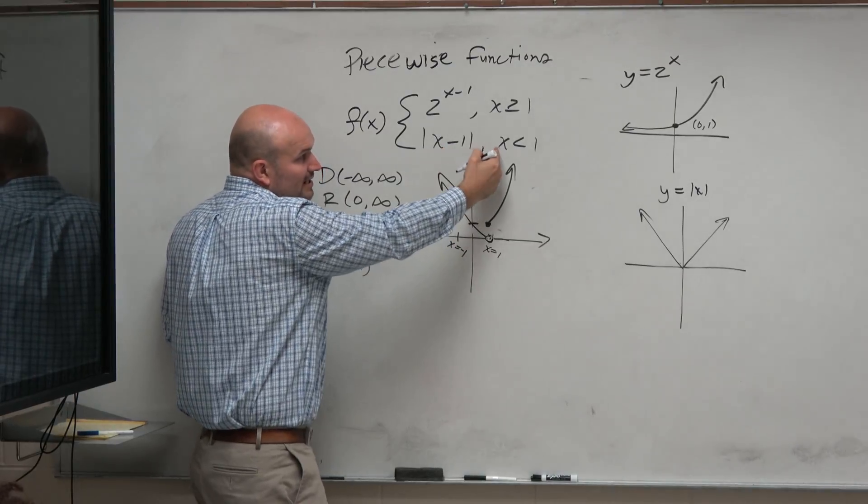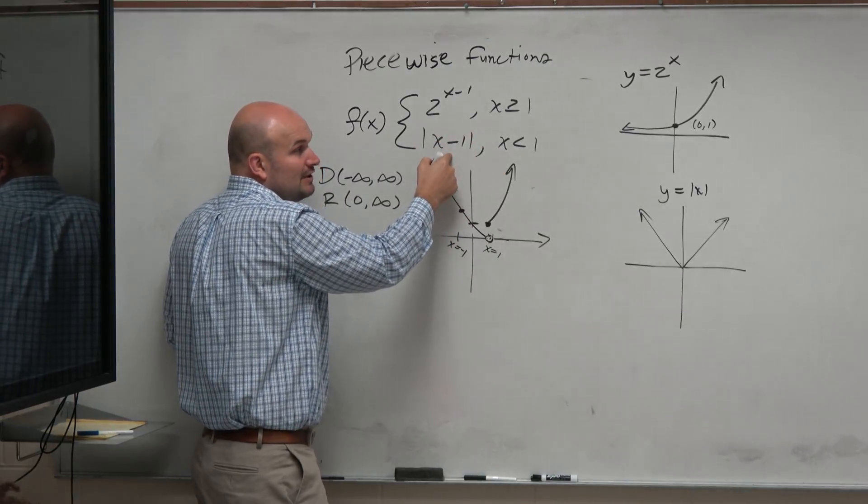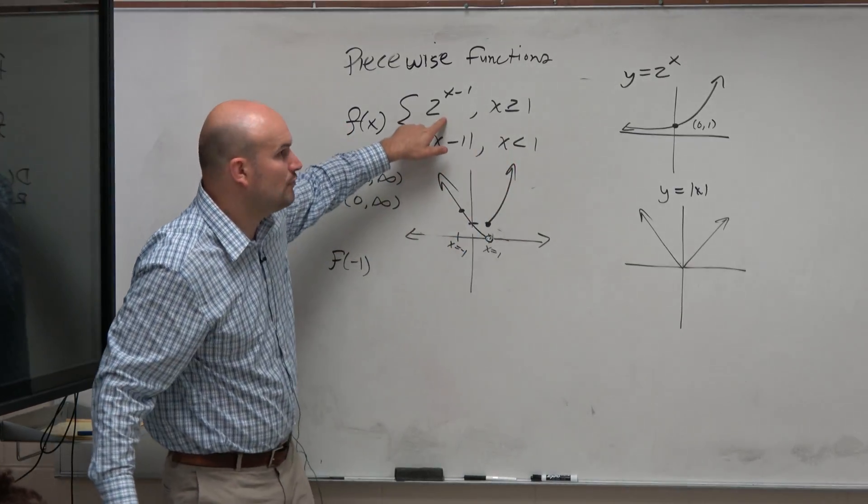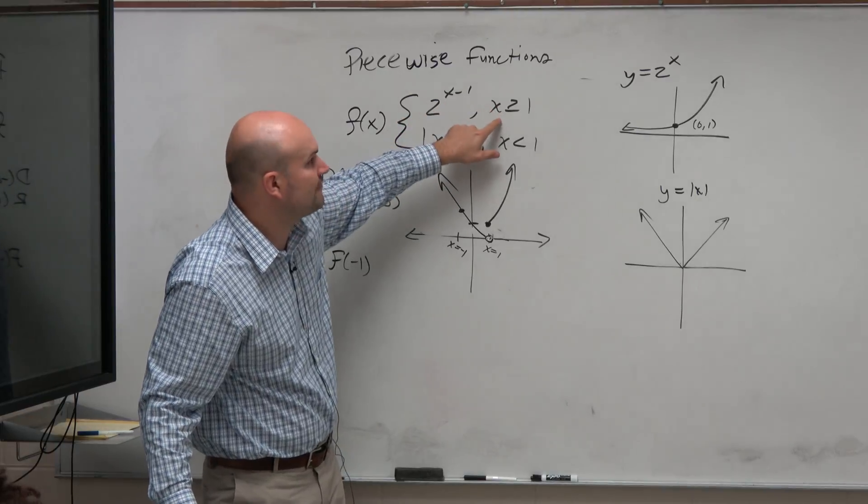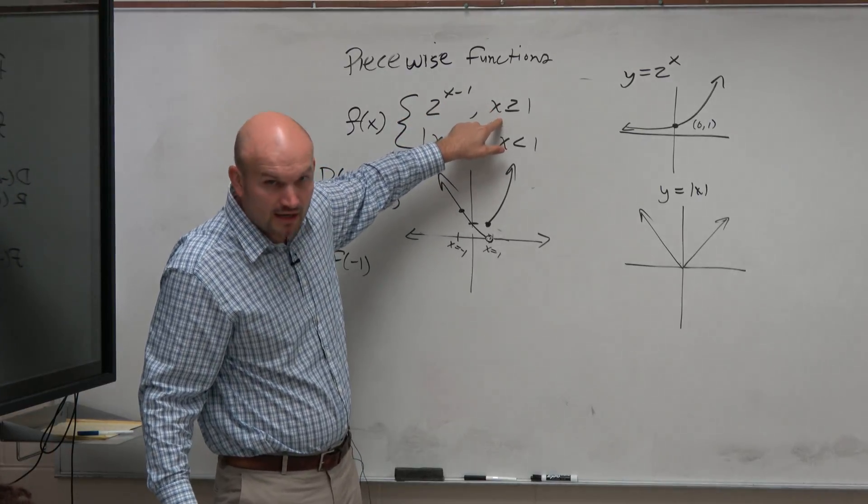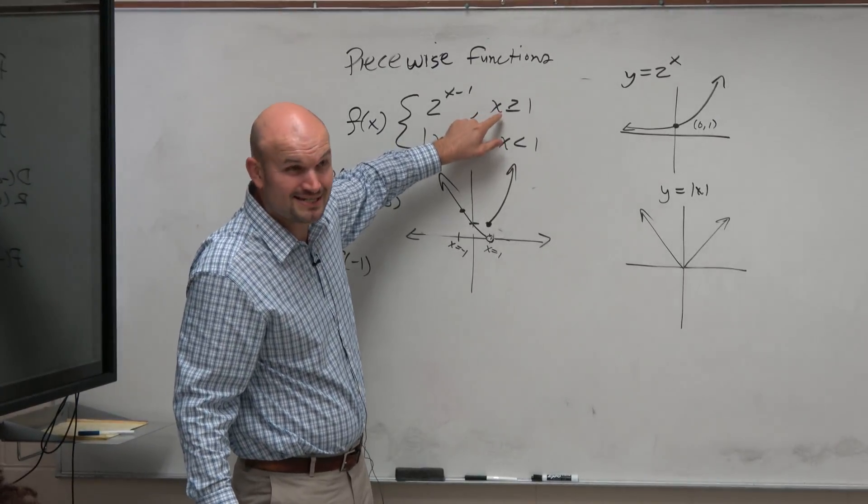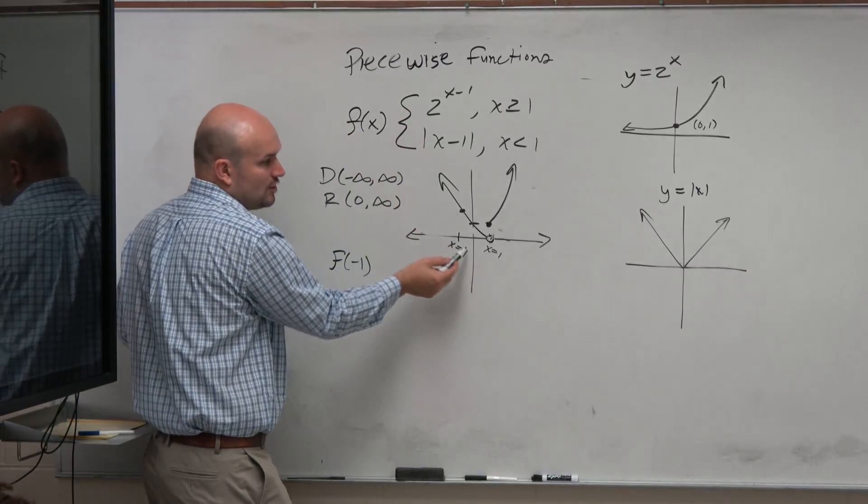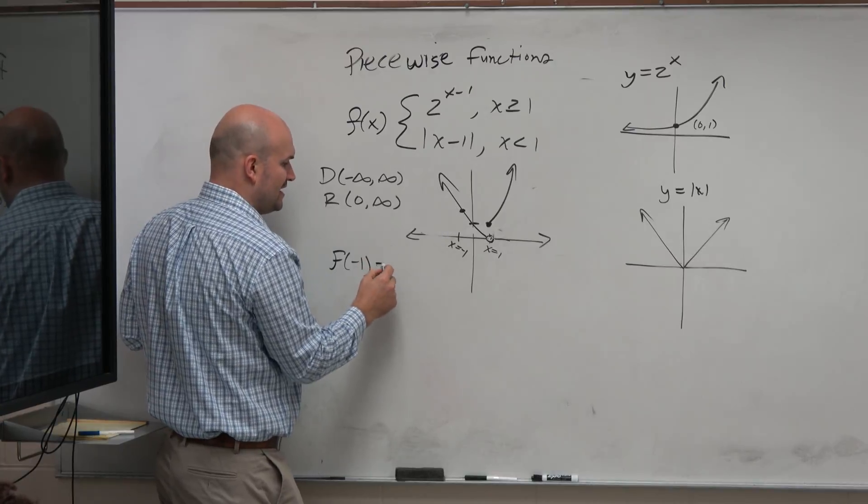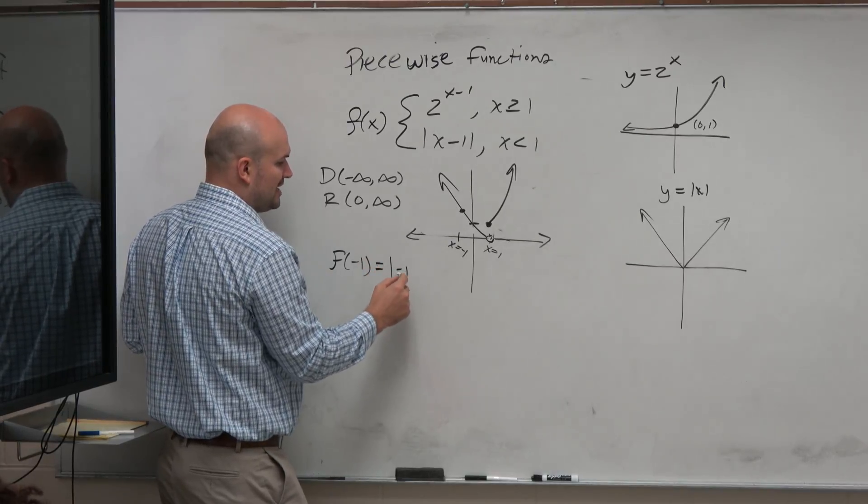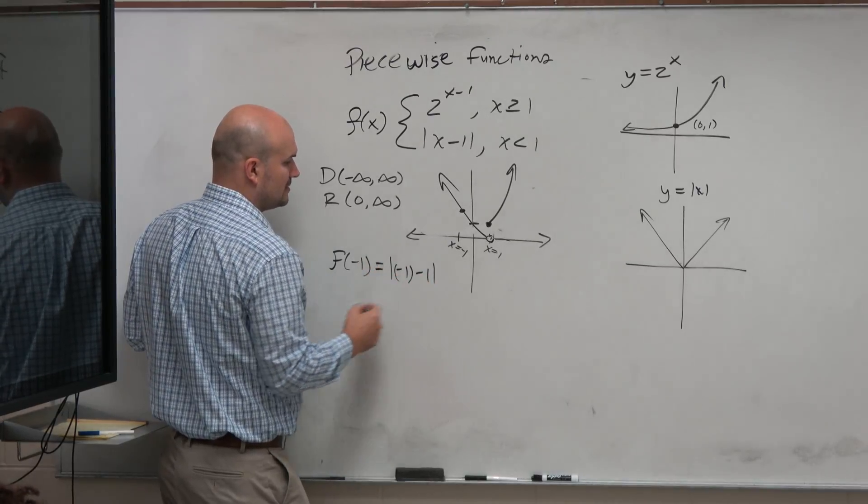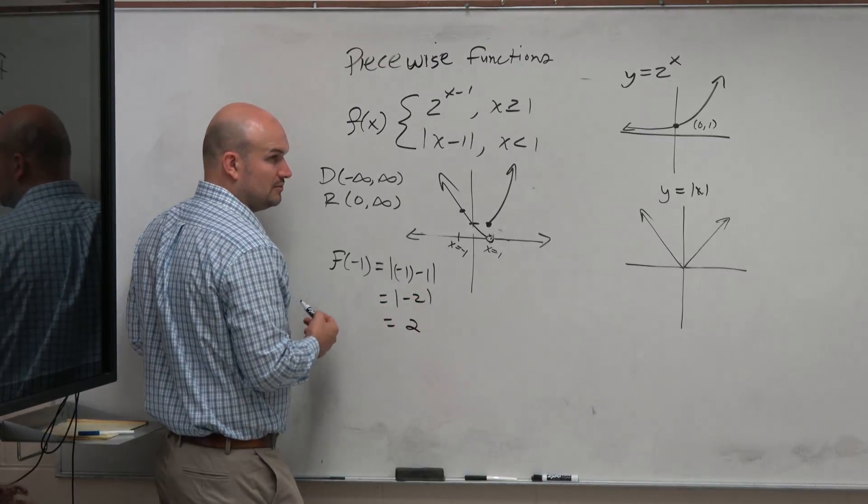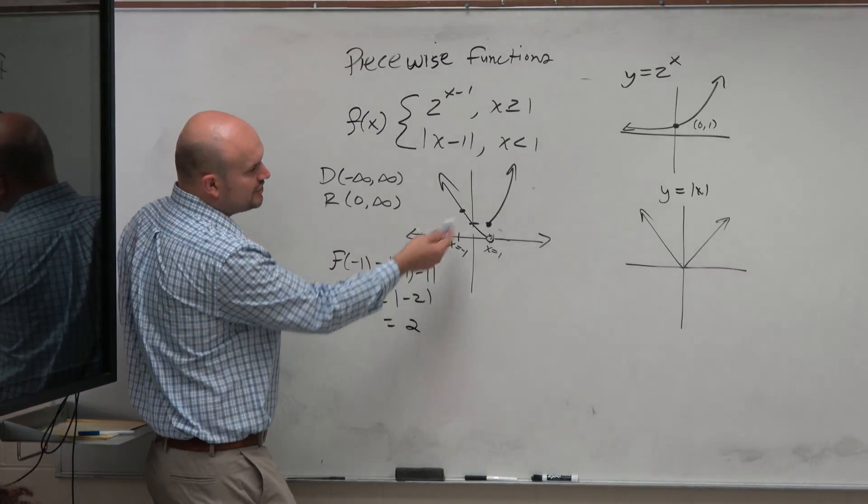Why is that? Because negative 1, this function, absolute value, is only defined for x values that are less than 1. You don't plug negative 1 into this function, because this function is for only x values that are greater than or equal to negative 1. No matter how many times I say this, students still plug negative 1 into both equations. It's only evaluated on the absolute value. So if I wanted to algebraically figure out that value, I just plug in negative 1, and I get positive 2.